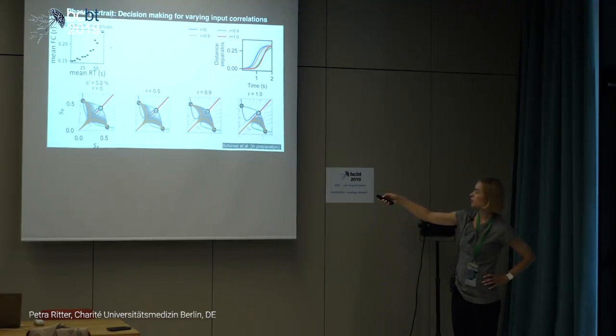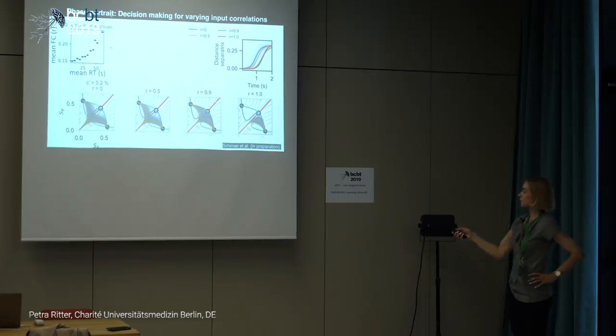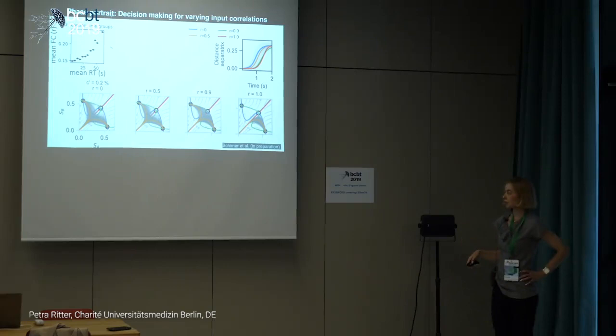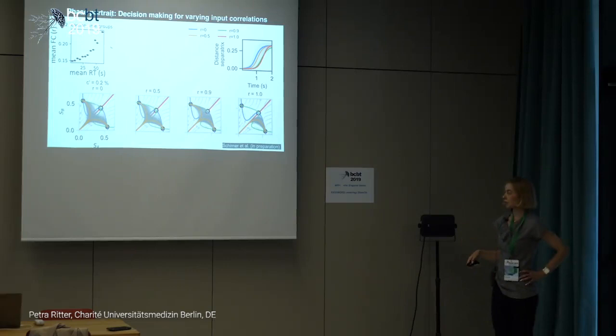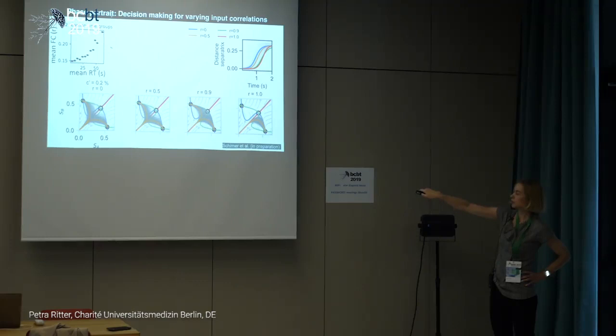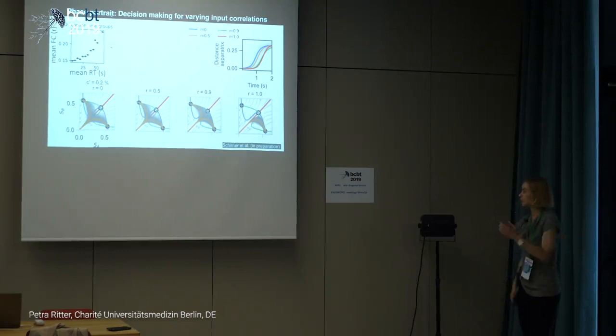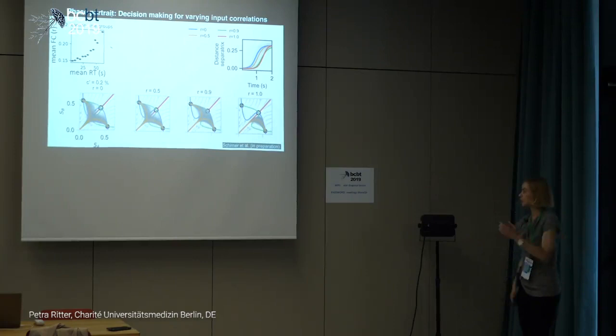With very low functional connectivity, state variables quickly move apart from the separatrix. With higher functional connectivity, they stay close longer, and with 100% correlation the decision always goes to the correct attractor state. Being balanced near the separatrix for longer means the system has more time to average noise and accumulate the real evidence, so the final decision is better.